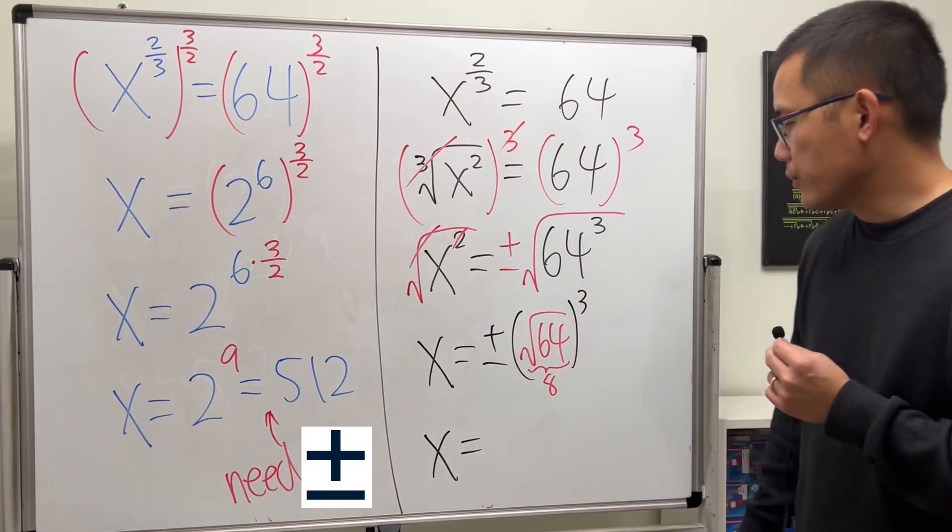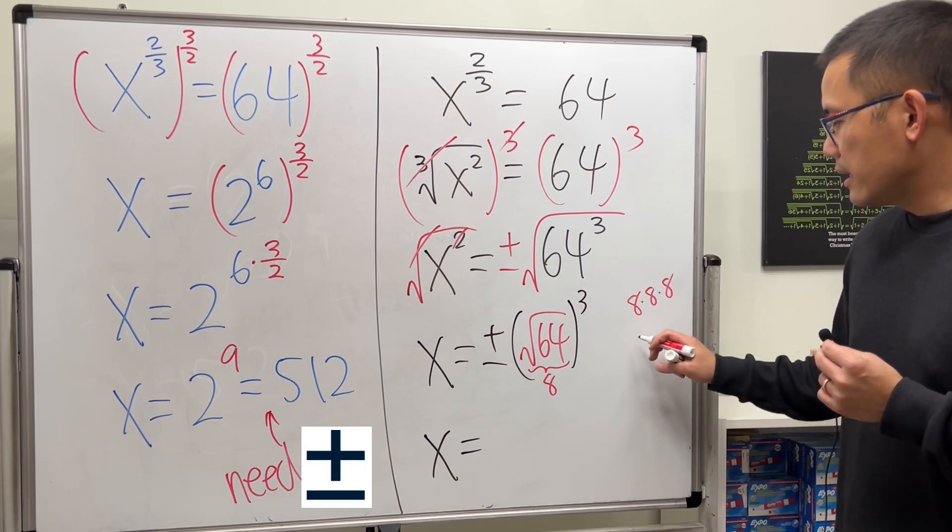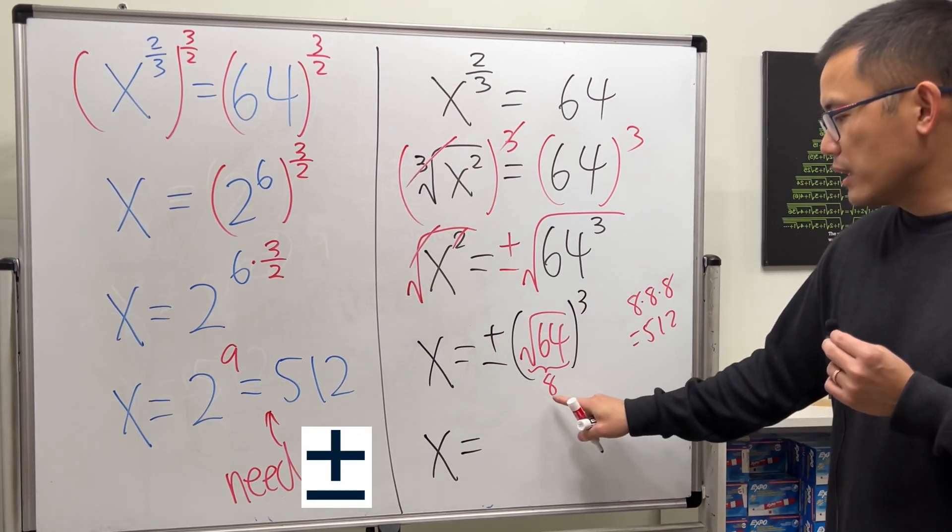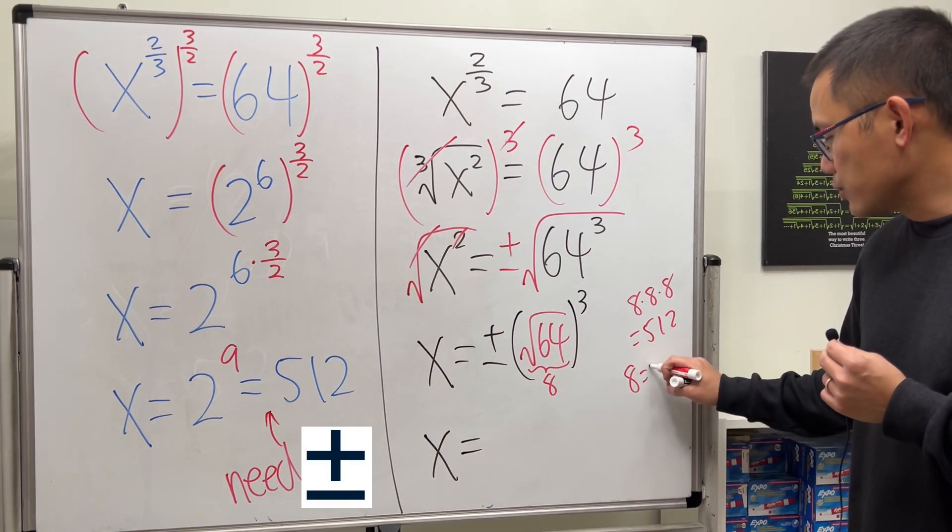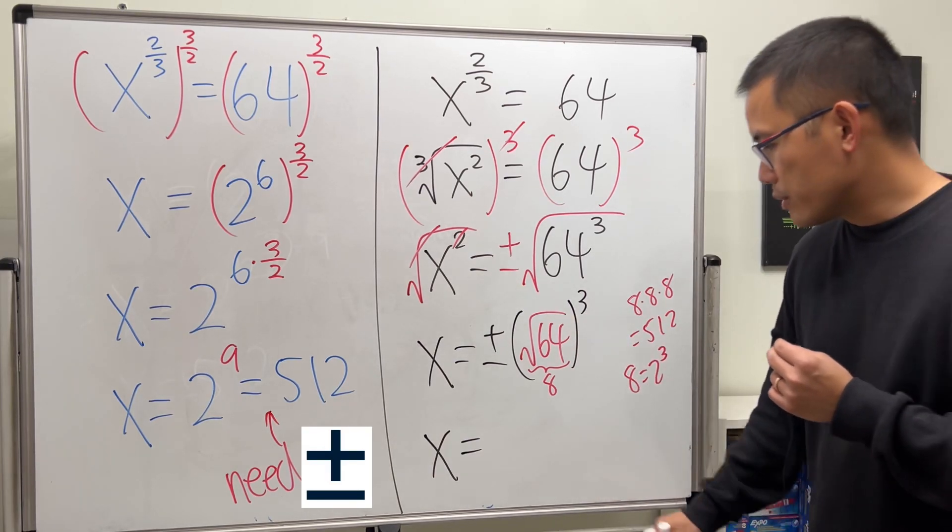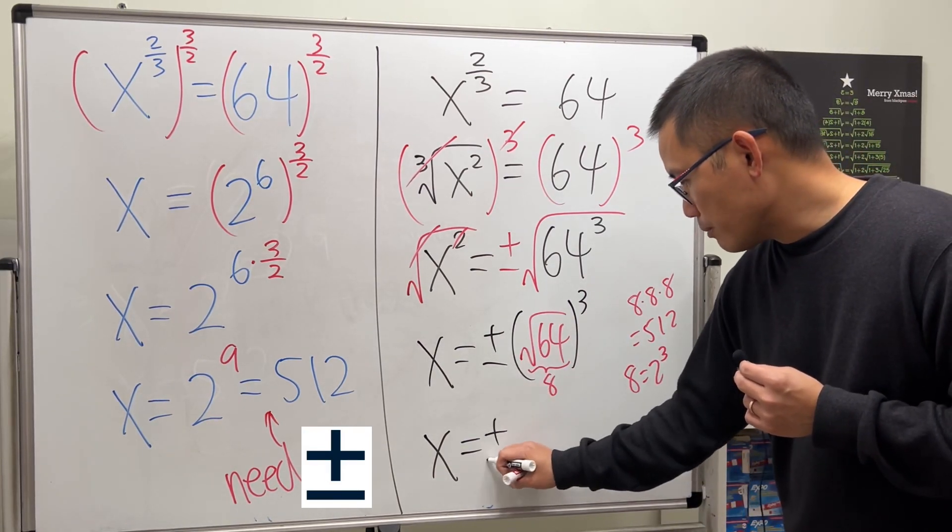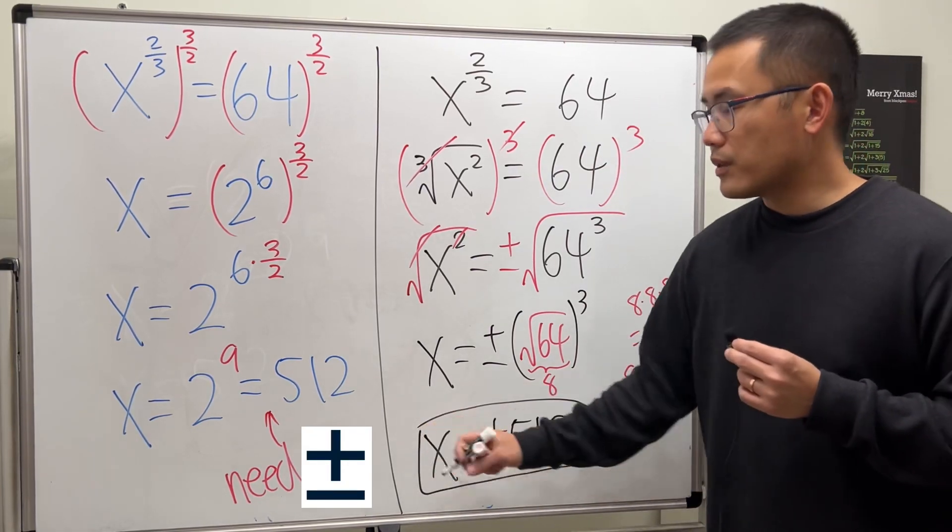So x is equal to... you can just do 8 times 8 times 8 and that will give you 512. Or if you look at this as 2 to the third power, right, because 8 is the same as 2 to the third power and then raised to the third power, it's the same as 2 to the ninth power. But anyways, plus or minus, the answer for this is 512. So this right here is the correct answer.